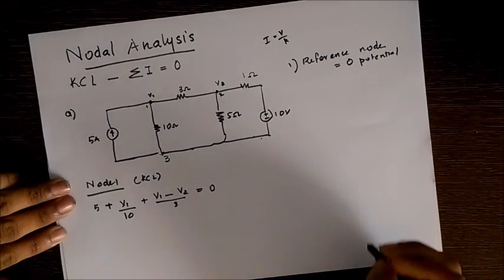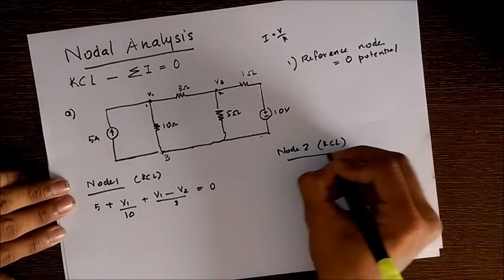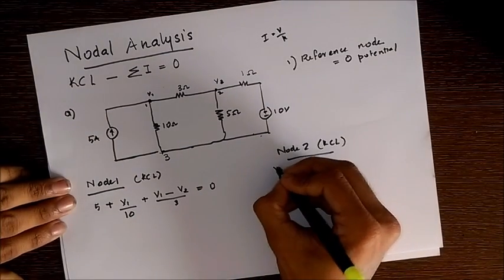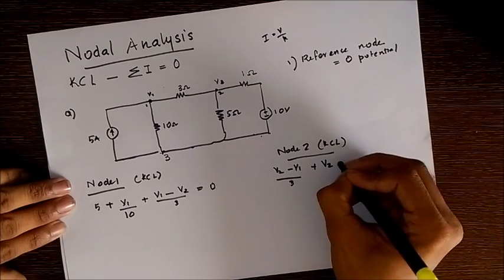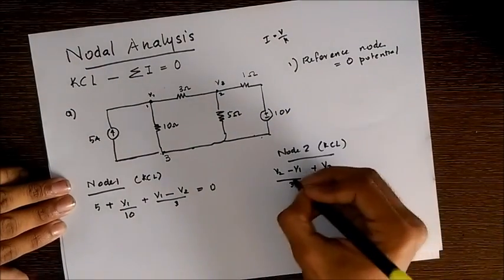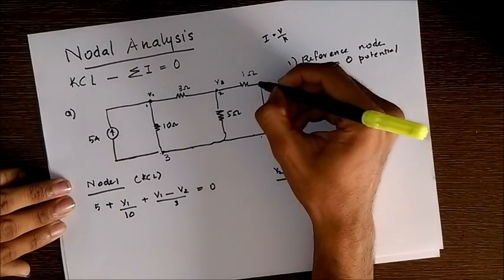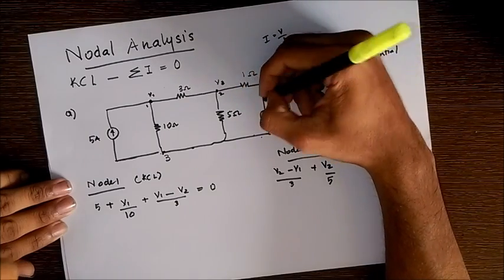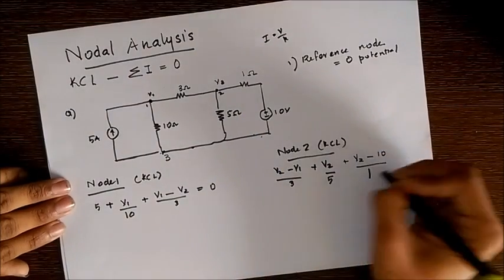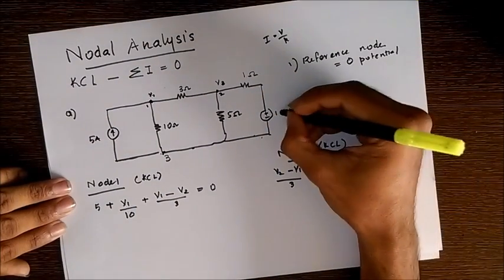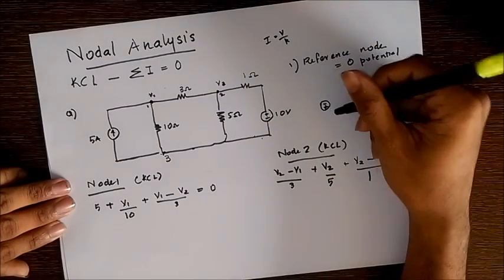At node 2, when we apply KCL, similarly we can write V2 minus V1 by 3 plus V2 minus 0 by 5. Now here we have a 10 volt battery, so we have to find the voltage drop across the resistor which is V2 minus 10 by 1. If the 10 volt was in the opposite sign, the voltage would be V2 plus 10.